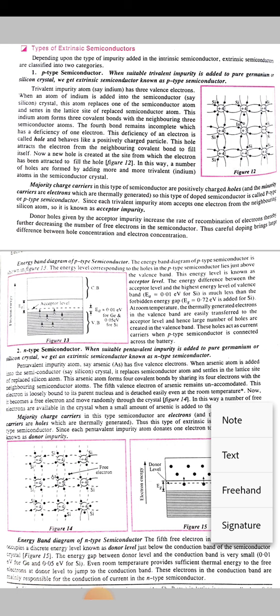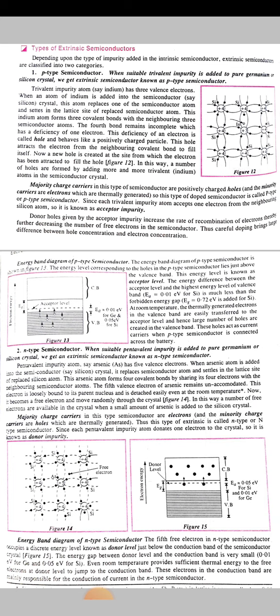At room temperature, the thermally generated electrons in the valence band are easily transferred to the acceptor level, and hence a large number of holes are created in the valence band. These holes act as current carriers in the p-type semiconductor when connected across a battery.